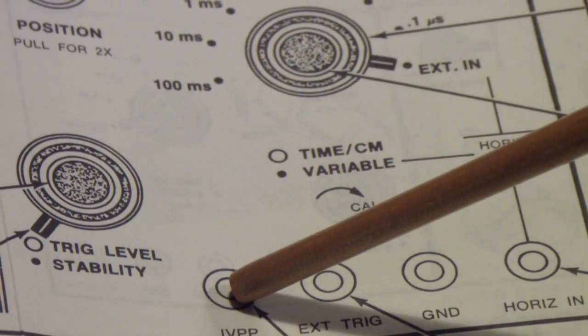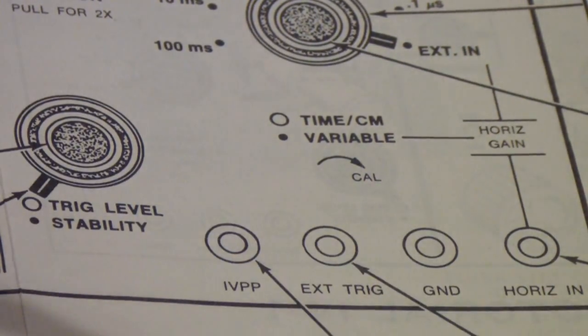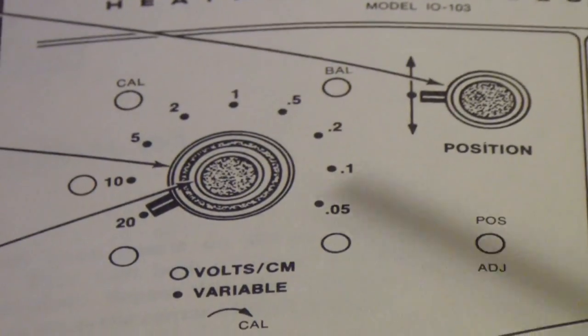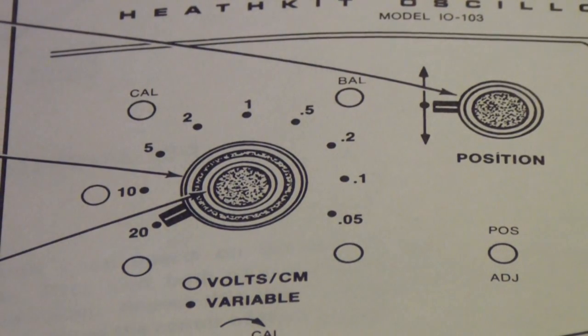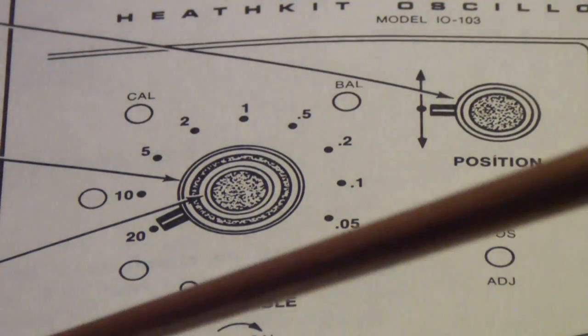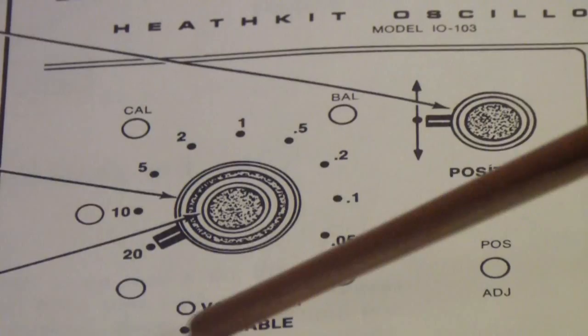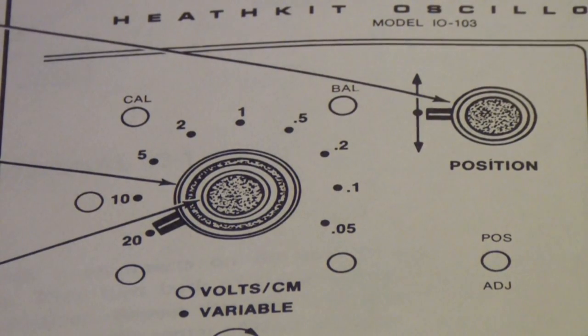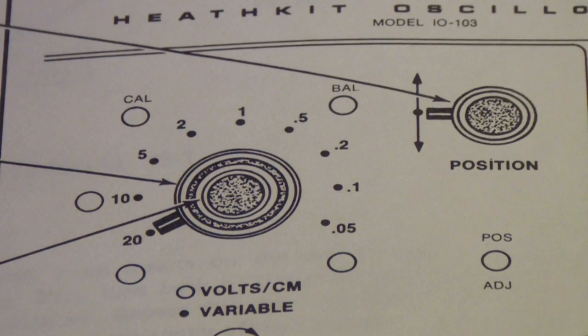You used this 1 volt peak-to-peak as the input signal while you were adjusting the cal and balance. You would apply 1 volt peak-to-peak, adjust the cal. Then you would short the input and adjust the balance, and so on, until you got a balance across the whole range and the calibration within the specifications of the oscilloscope. This was what I was referring to when I said calibrate.